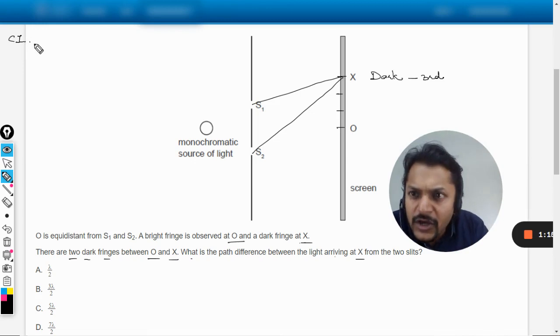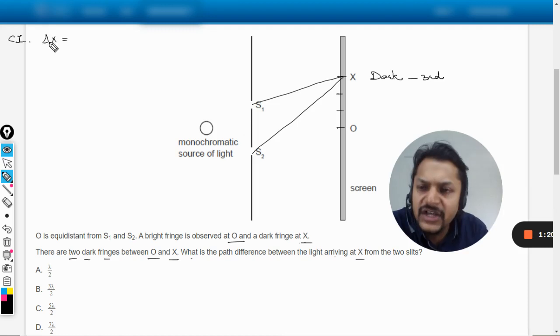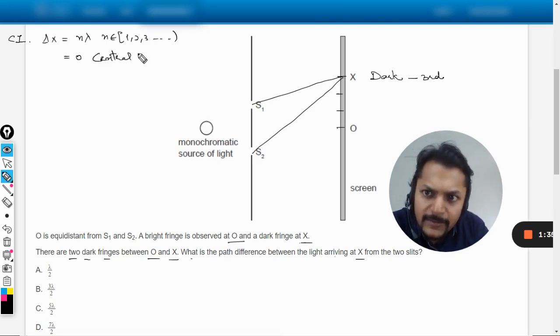For constructive interference, the condition on the path difference, I write it as delta x, path difference is n lambda, where n is an element of 1, 2, 3, and all up to infinity. When n equals 0, it is known as central bright fringe.